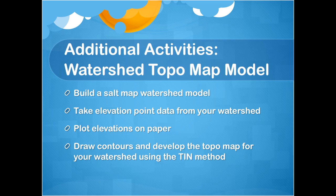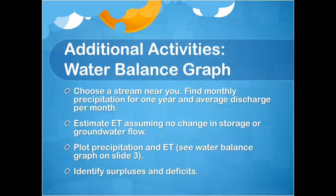For more practice with water budgets, watersheds, and topo maps, complete the additional activities included with the lesson. In the watershed topo map model activity, you will construct a saltwater map watershed model, take elevation point data using a ruler, plot the points on paper, and use the TIN method to draw contours and develop the topo map. You can also create a water balance graph for a stream near you: find monthly precipitation and average discharge per month, estimate evapotranspiration assuming no change in groundwater flow or storage, then plot precipitation and evapotranspiration to create a water balance graph and identify the surpluses and deficits.